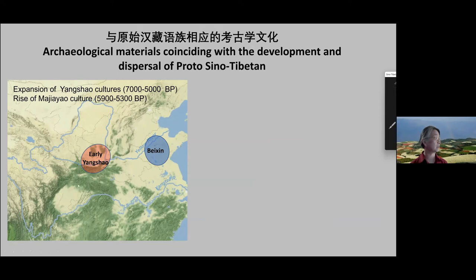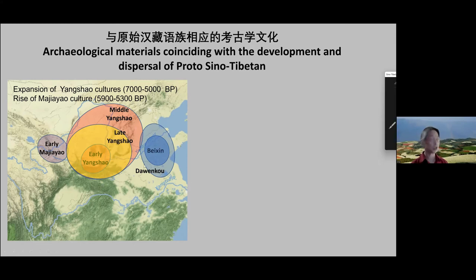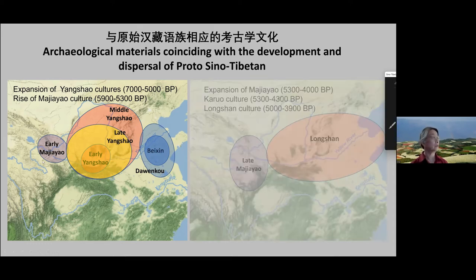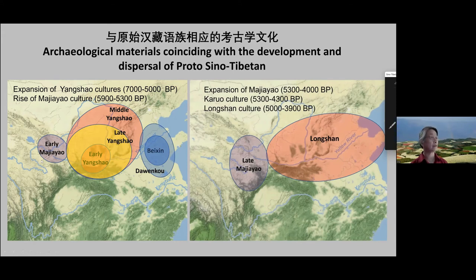Early Yangshao was located in the middle Yellow River, contemporary with eastern cultures. The middle Yangshao expanded north and west, and the late Yangshao saw the development of the Majiayao culture as a branch. Around 5,000–4,000 years ago, Yangshao culture was replaced by Longshan culture, but the late Majiayao culture continued expanding westward and entered the Tibetan plateau.